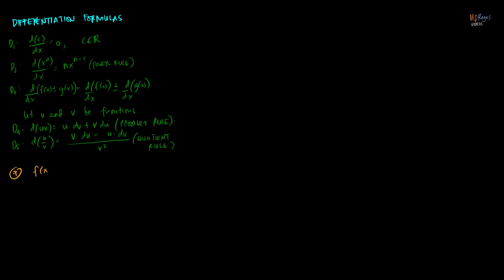Let's say f of x is equal to 4x squared minus 2x plus 1. Getting the derivative of the function f, we can just get the derivative of each of the three terms in terms of x, denoted by f prime of x.